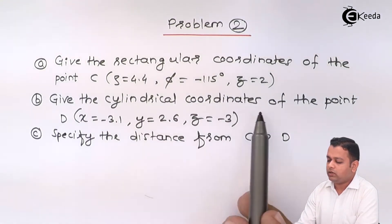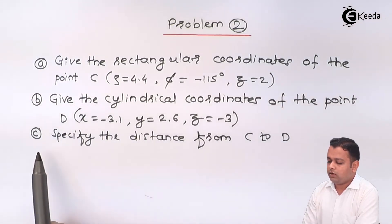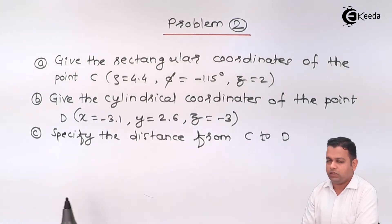Part B is, give the cylindrical coordinates for the point D, the rectangular coordinates are provided, and part C, specify the distance from C to D.